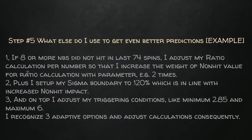Here's a concrete example: if eight or more numbers didn't hit in the last 74 spins, I adjust my ratio by giving more weight to the non-hit value rather than hit frequency. I also adjust my sigma boundary — in this case to 120% — and change my triggering conditions. These values are fully up to you; it all depends on how you calculate the ratios and what ranges they fall in. It's a hint for how you can dynamically evaluate what's happening on the table.